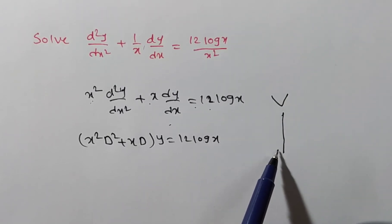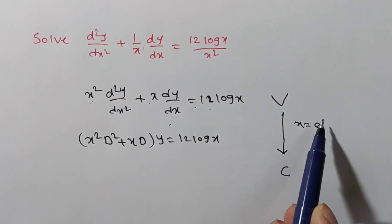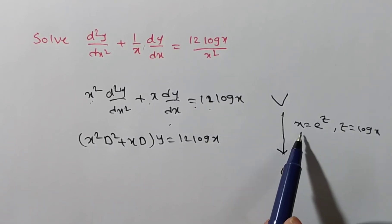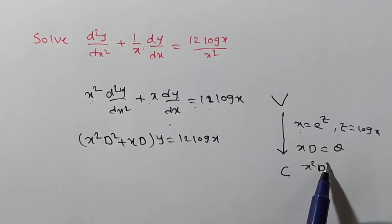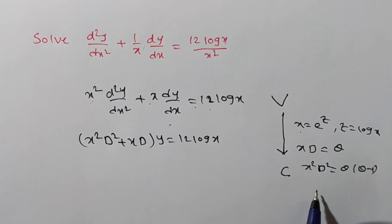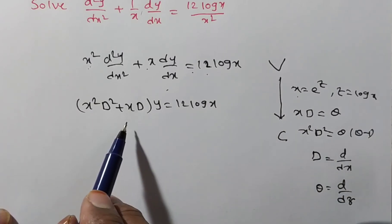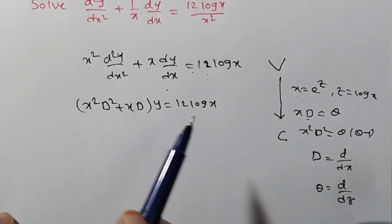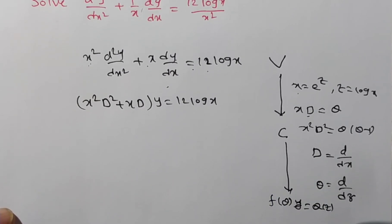The operator form is: x²D² + xD times y = 12 log x, which is in the form f(D)·y = Q(x). But since this has variable coefficients, we cannot solve it directly. We must convert to constant coefficients by substituting x = e^z, where z = log x. Under this substitution, xD is replaced by θ and x²D² is replaced by θ(θ−1). The equation then becomes f(θ)·y = Q(z) form.